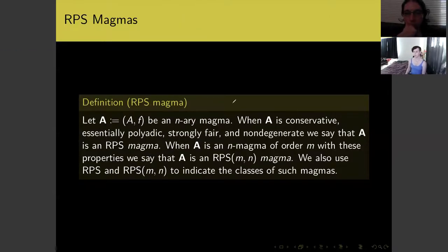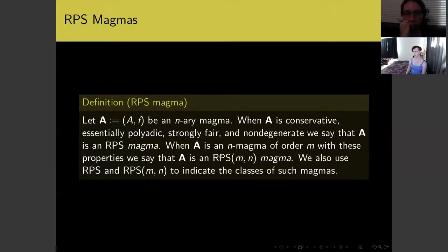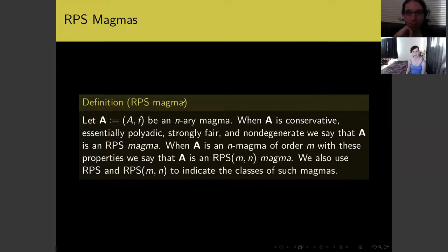An RPS magma is a conservative pseudo RPS magma — that is, a game or magma satisfying all four conditions: conservative, essentially polyadic, strongly fair, and non-degenerate. We have similar notation for these classes with order m and arity n. I feel like I've been going pretty fast — if you have any questions, please ask. I appreciate getting feedback even in the middle of my talk.